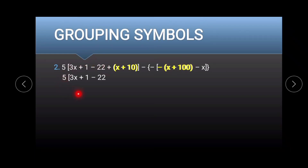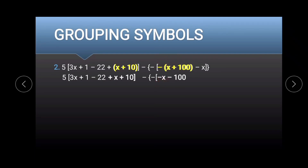Copy 5 multiplied to 3x plus 1 minus 22. Since the preceding operation here is addition, no changes shall be made to the signs of x plus 10, so it stays x plus 10. Then negative multiplied to positive x gives negative x, and negative times positive 100 gives negative 100. Copy negative x.